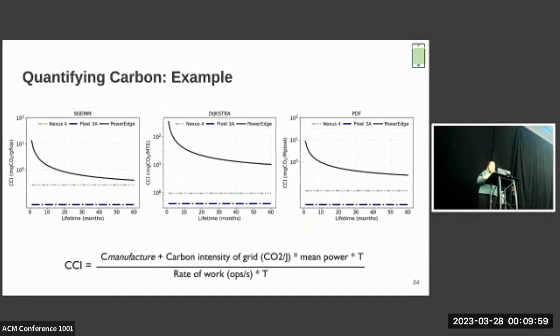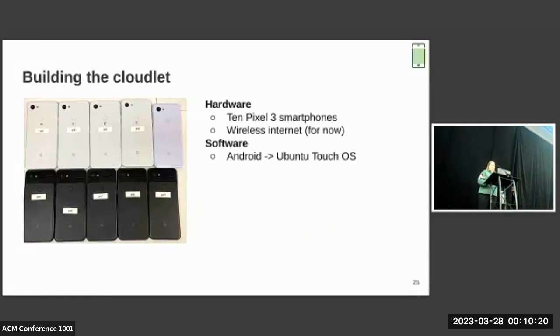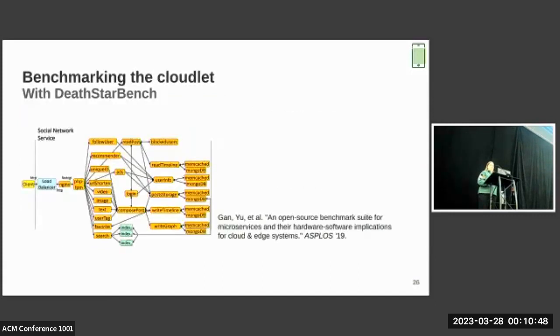Let's talk about what we actually built in order to get a better idea of what a real system might look like. We've built a prototype cloudlet that consists of 10 Pixel 3 smartphones. We connect them over Wi-Fi since that was pretty easy. At least for now, in the future, we would like to move to wired. For the software stack, we replaced the Android OS with Ubuntu Touch, which is an open-source mobile operating system that provides a more desktop-like experience. It makes development a lot easier, and it also gets around some of those issues related to Android that we mentioned previously. We had to do some further kernel hacking to add back in some modules that had been excised from the Linux kernel for mobile. This allows us to do things like run Docker on the phones. We then deploy microservice-based applications across our cluster.